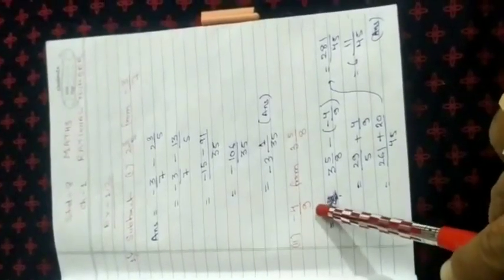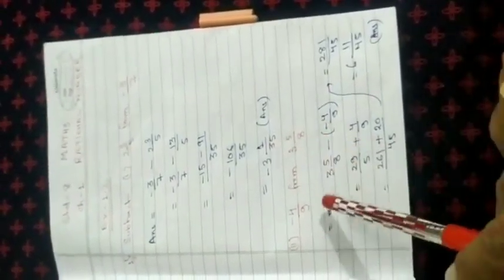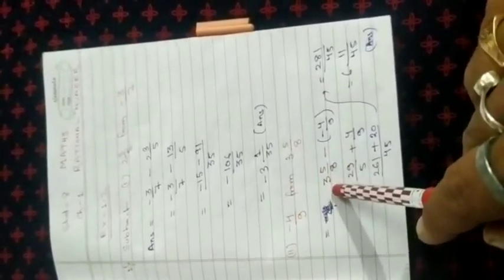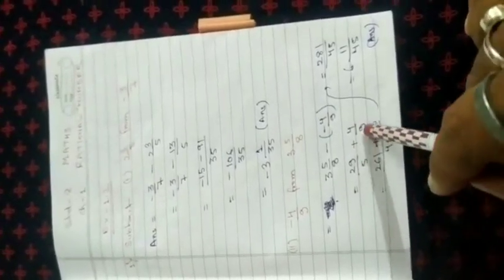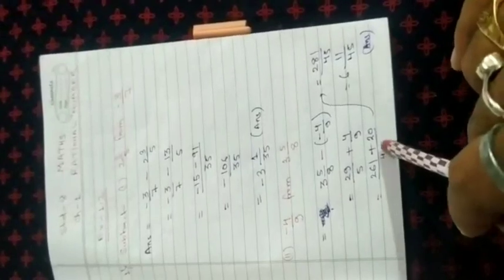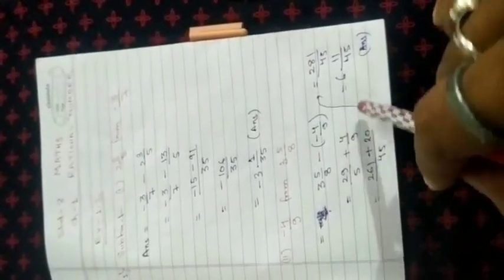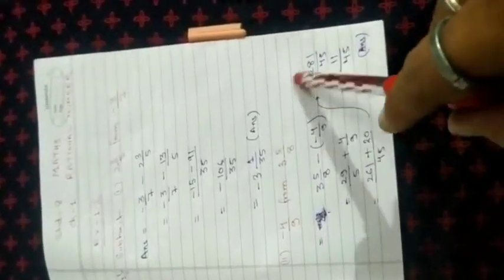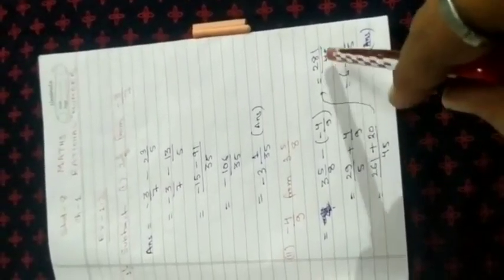Second question: subtract minus 4/9 from 3 5/8. You write 3 5/8 minus minus 4/9. Change the mixed fraction to an improper fraction: 8 times 3 is 24, plus 5, that is 29/8. Minus minus becomes plus 4/9. Take the LCM of 8 and 9, which is 72. Dividing gives 261 plus 20, that is 281/72. Change this to a mixed fraction: 6 11/45.